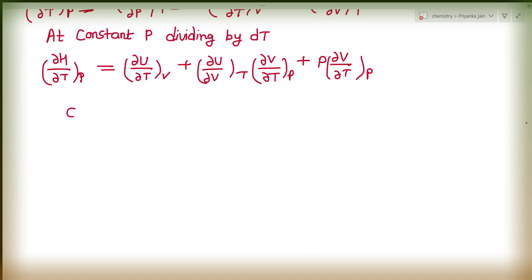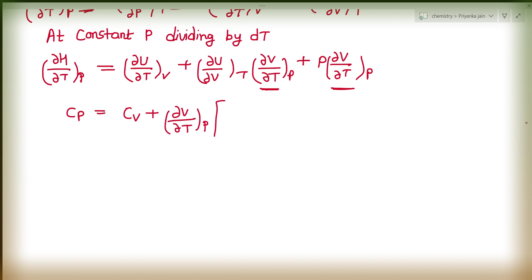Now, (∂H/∂T) at constant P is equal to CP, and (∂U/∂T) at constant V is equal to CV. So we write CV plus — the term (∂V/∂T) at constant P is common, so we can factor it out: (∂U/∂V) at constant T plus P, times (∂V/∂T) at constant P.